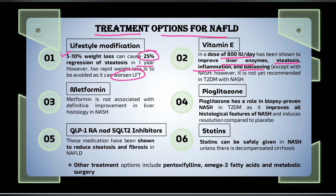There are lesser effects in the case of type 2 diabetes with NASH. We should consider prescribing metformin, though metformin is not associated with definitive improvement in liver histology in NASH. Pioglitazone has shown a very effective role in biopsy-proven NASH with type 2 diabetes, as it can improve all histological features of NASH and induces resolution. GLP-1 receptor agonists and SGLT-2 inhibitors have also been shown to reduce steatosis as well as fibrosis in NAFLD.